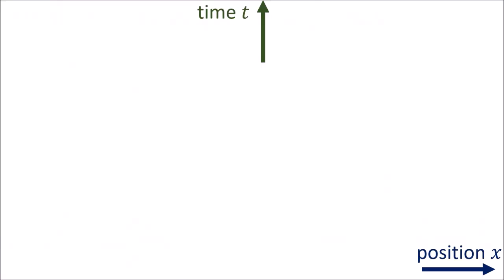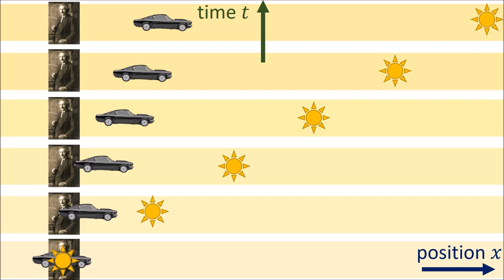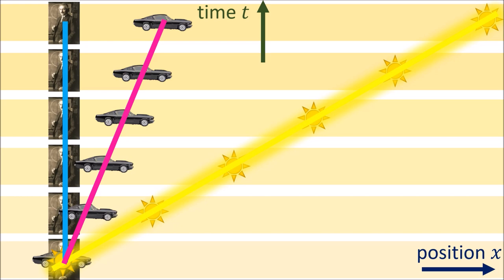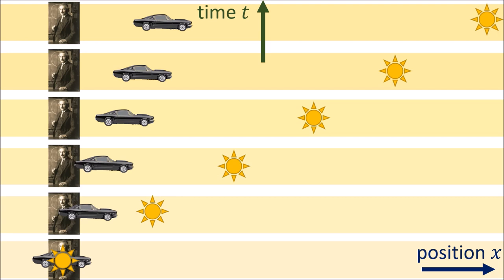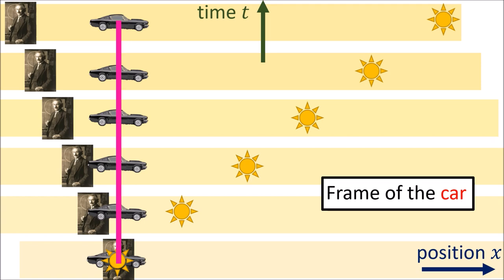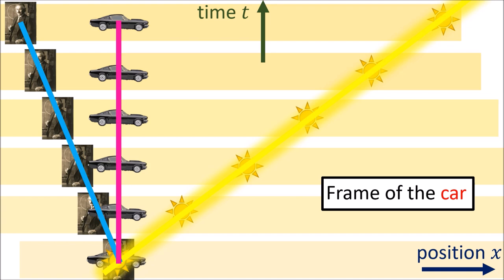Another way to visualize changing reference frames in Galilean relativity is to take a series of photographs as the objects move forward in time. Here we can see that the world line of the car is diagonal and moving to the right, and a beam of light is also traveling to the right, but much faster. But the world line of the scientist is vertical, meaning we are in the frame of reference of the scientist since he is standing still. If we want to change to the car's frame of reference according to the Galilean transformation, we just shift the photographs over so that the car's world line is vertical. We can see now that the scientist is moving off to the left, and the beam of light is still traveling to the right, but at a slower speed.